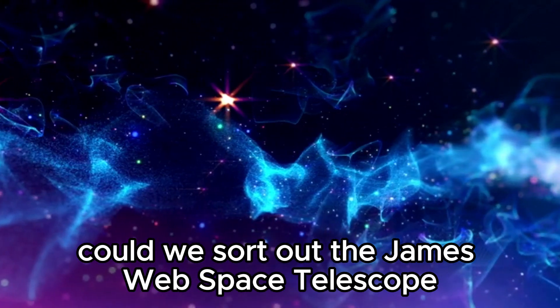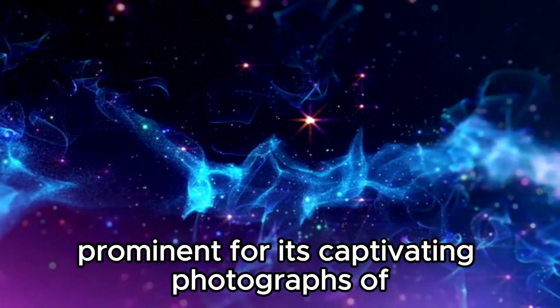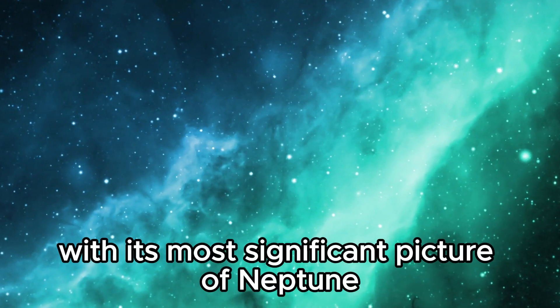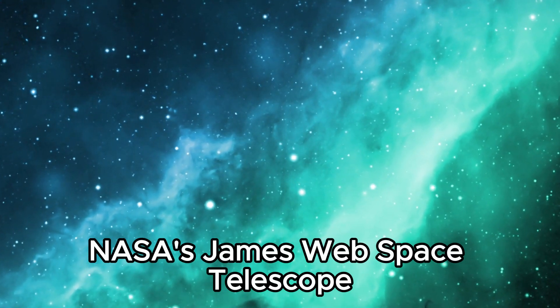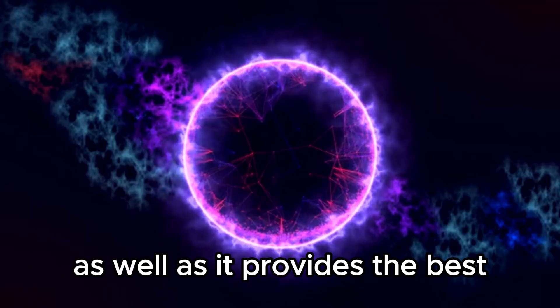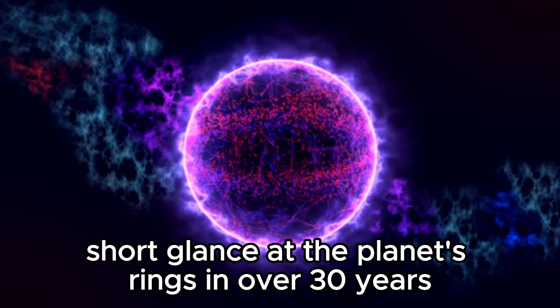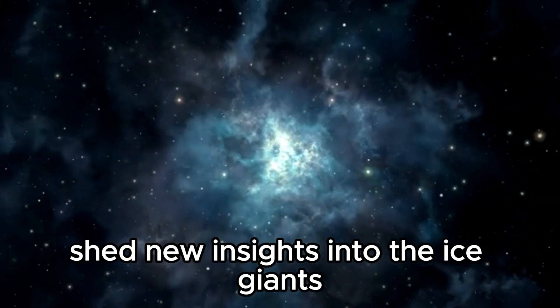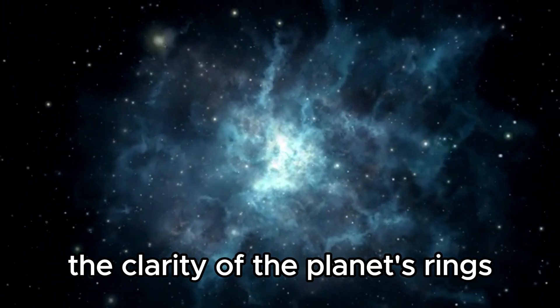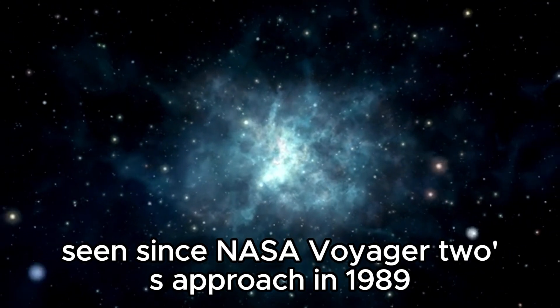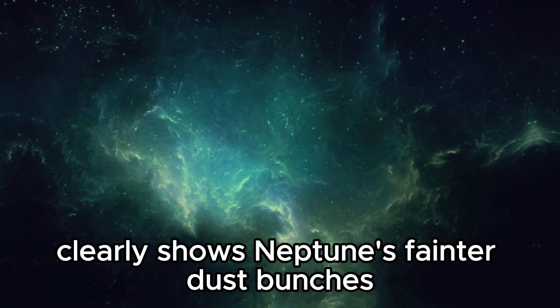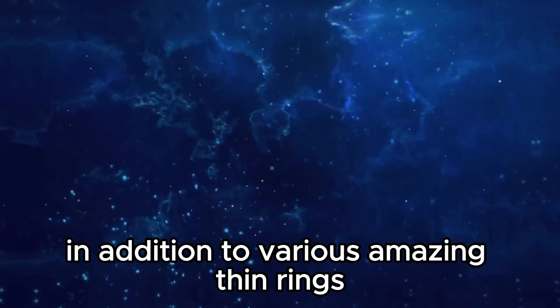The James Webb Space Telescope, already prominent for its captivating photographs, has succeeded with its most significant picture of Neptune. NASA's James Webb Space Telescope shows its capabilities closer to home, providing the best glimpse at the planet's rings in over 30 years. The clarity of the planet's rings, some of which have not been seen since NASA Voyager 2's approach in 1989, stands out. The Webb image clearly shows Neptune's fainter dust bands in addition to various thin rings.